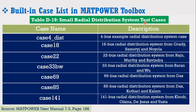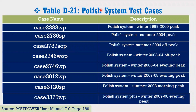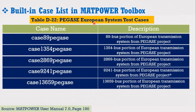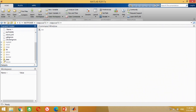Similarly, look at another table which provides the list of all the standard radial distribution test systems. It includes MATLAB programs of various standard test systems including the famous IEEE 33 and IEEE 69 bus systems. Similarly, there are tables listing MATLAB programs of all standard synthetic grid test systems, Polish test systems, European test systems, and French test systems respectively. From these tables, you can realize how useful this MATPOWER toolbox is for electrical power engineers to do their research. All MATLAB programs of various standard test systems are available in the data folder.